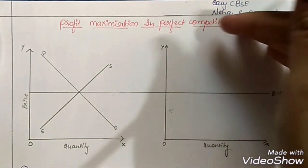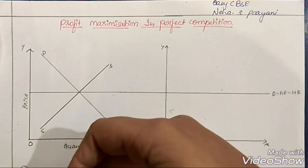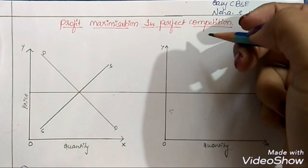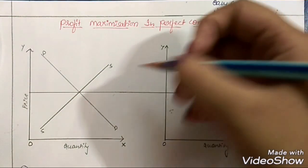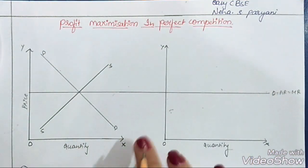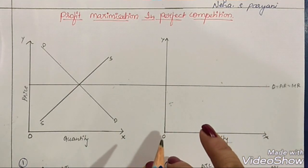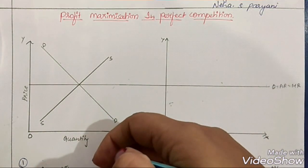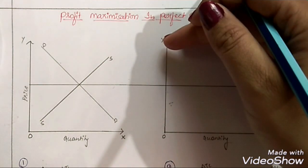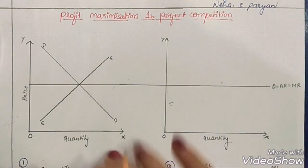In this video we will discuss profit maximization in perfect competition. In one of my previous videos we have already discussed the concept of the perfect competition market, its features, and why the price in this type of market is decided at the equilibrium point. If you haven't watched those videos yet, I'll provide the link in the description box below — I recommend checking those out first before continuing.